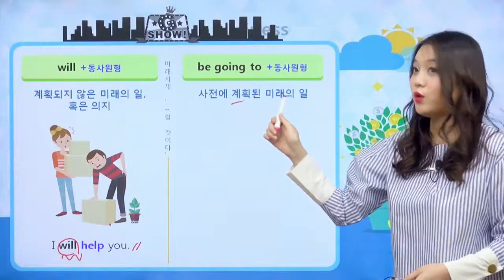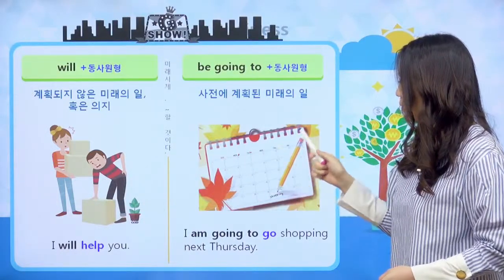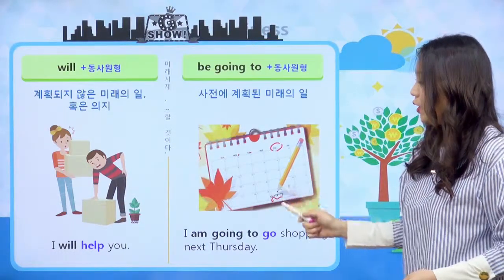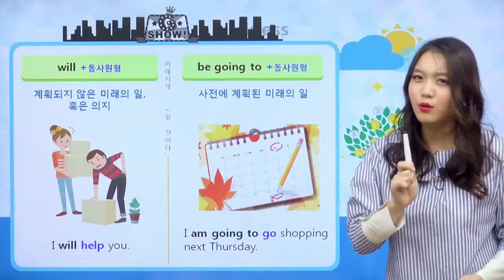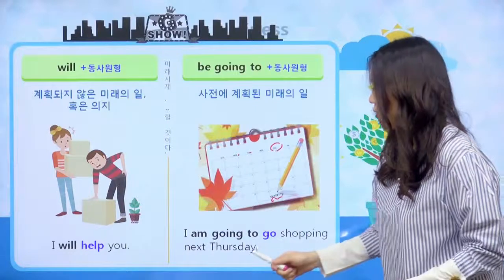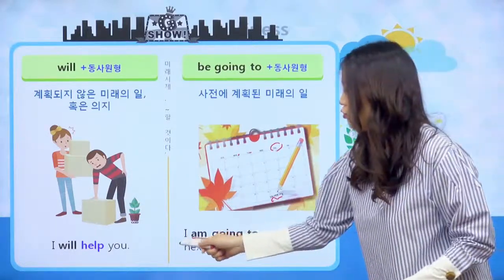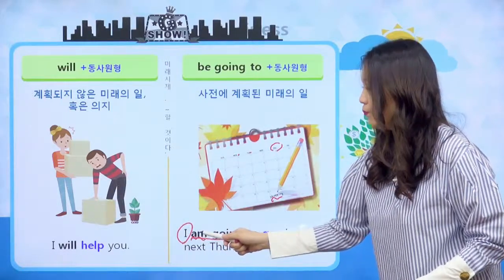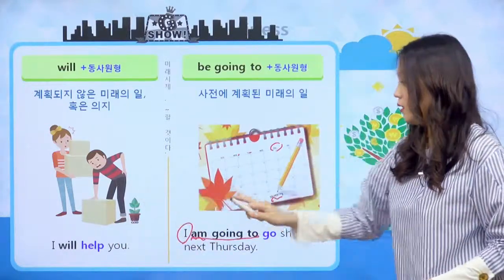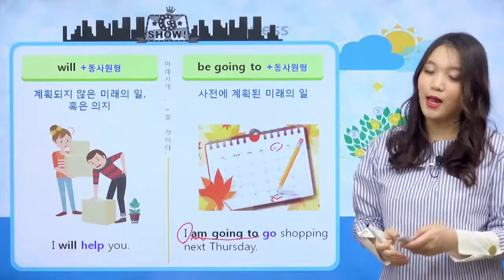계획된 일은 어떤 게 있는지 한번 살펴볼게요. 여기 달력이 있고 목요일 날 보니까 쇼핑이라고 적어놨어요. 목요일 날 쇼핑을 가기로 미리 계획을 해놓은 거죠. 그래서 'I'm going to go shopping next Thursday'라고 이야기를 할 수 있는 거예요. 미리 계획된 일이기 때문에 be going to를 사용했고 주어가 I이기 때문에 am이 왔죠. 계획되지 않은 일은 will, 계획된 일은 be going to, 이런 차이점이 있구나라는 것을 알고 있으시면 돼요.